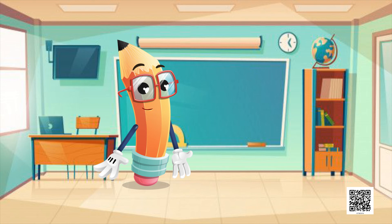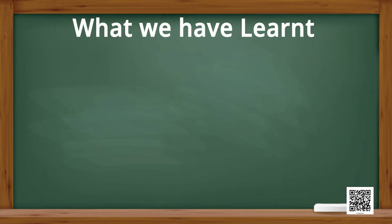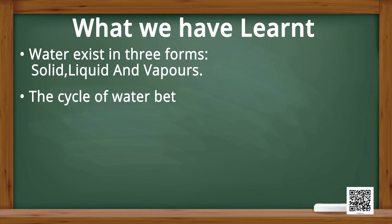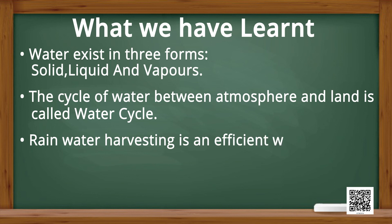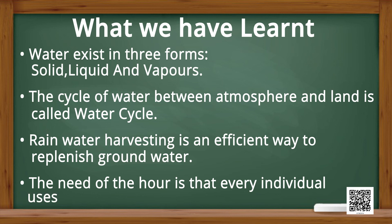So dear children, now let us see what we have learnt in this chapter. Water exists in three forms: solid, liquid, and vapours. The cycle of water between atmosphere and land is called the water cycle. Rainwater harvesting is an efficient way to replenish groundwater. The need of the hour is that every individual uses water economically.